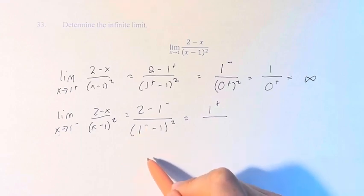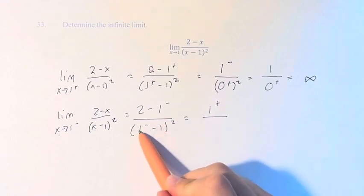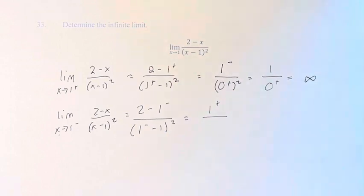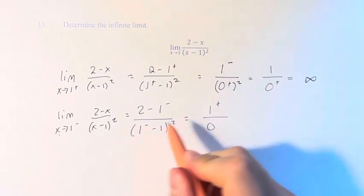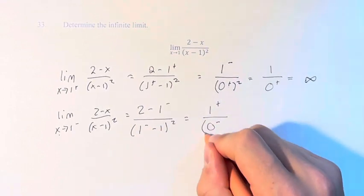1 from the left minus 1. 1 from the left minus 1 is 0. And again, the sign stays the same, from the left squared.